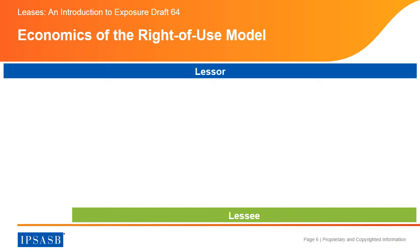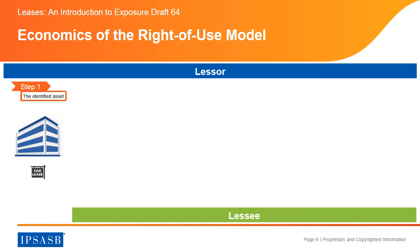With João's explanation, it now leads us to the main issue in ED64, the proposal of a single right-of-use model for lease accounting. The IPSASB right-of-use model for lease accounting can be explained in six steps. The first step starts with the underlying asset. As we all know, a lease starts with an underlying asset that is controlled by the lessor. Therefore, the lessor continues to recognize a measured underlying asset according to the applicable IPSAS.